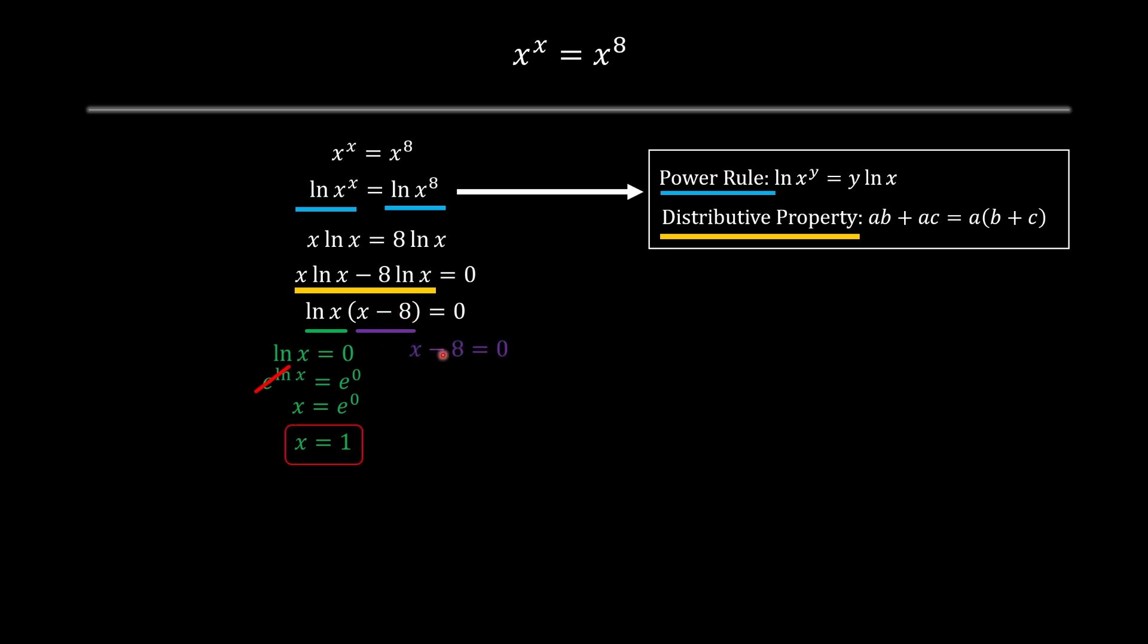Now let's do it for x minus 8. So x minus 8, we bring the minus 8 on the other side and we acquire x equals 8 and that's another real solution.